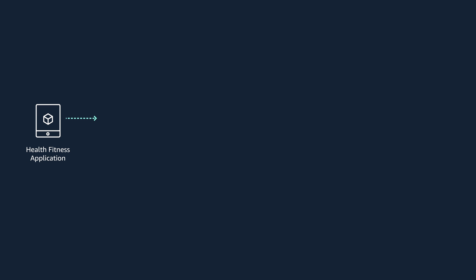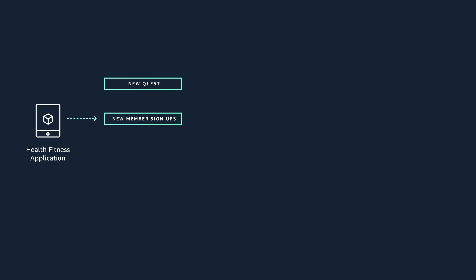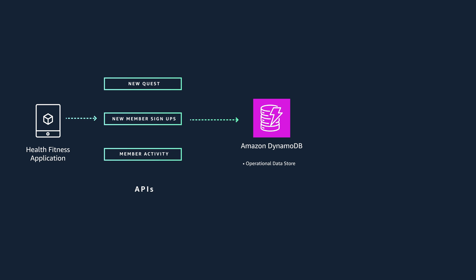Let's see how you go about designing for this use case. You have a user-facing health fitness application with well-defined access patterns like creating new challenges, new member sign-ups, and to track member activity as they progress through challenges. We selected DynamoDB as the operational data store as it provides fast and consistent performance at any scale for online applications. Access patterns are well-defined and DynamoDB table design can be tailored for those specific query patterns.